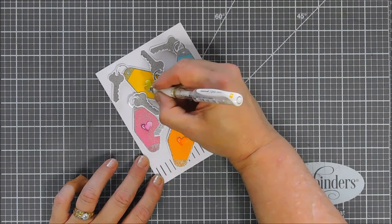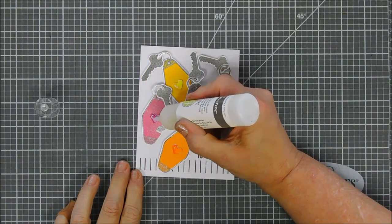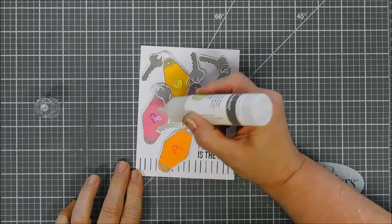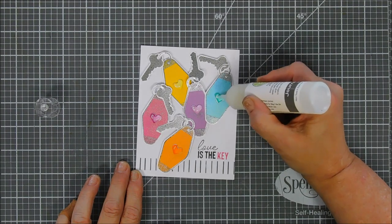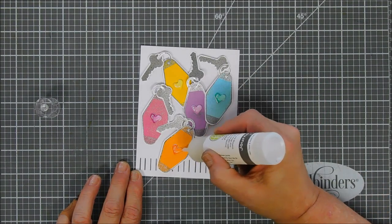After we have this done I'm going to use my journey glaze and go over each one of the hearts. It goes on a little bit cloudy and then it dries clear and nice and shiny and so I think that's going to be the perfect touch to these cards.